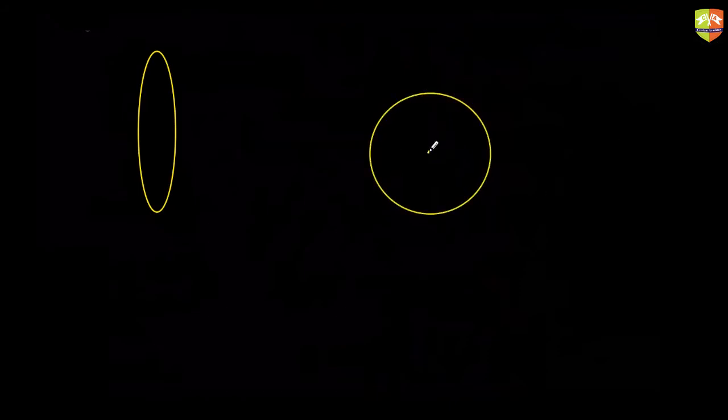Let's do the further calculations. We'll do the simpler one first. You have a ring in the plane of your screen. Can you tell me what is the field at the center of this ring? Total mass is M and radius is R. What is the field at the center?